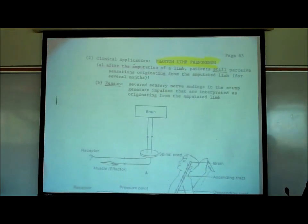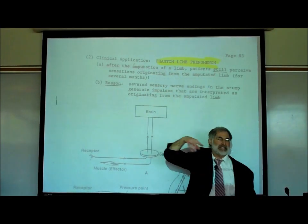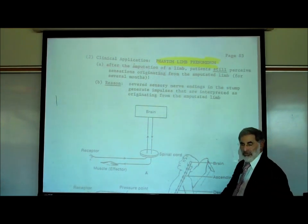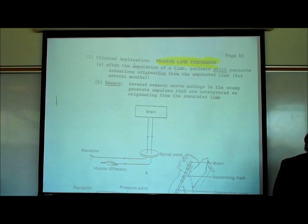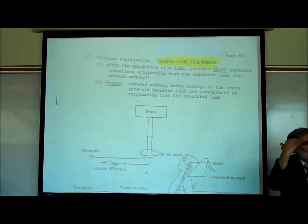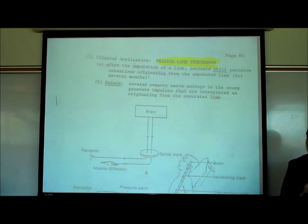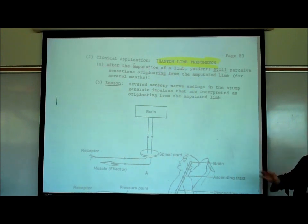Phantom limb is where, after somebody has had an arm or a leg amputated, they still feel that they have that arm or leg there. They can feel temperature and pain and sensations coming from that phantom arm that's no longer there. This is called the phantom limb phenomenon.